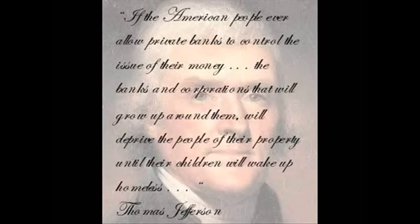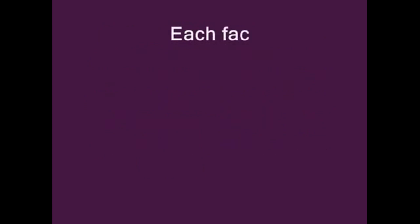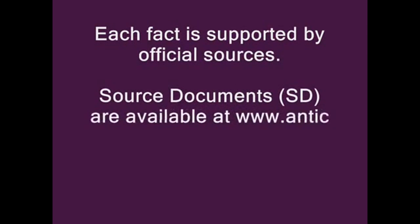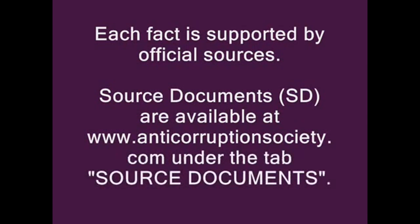If the American people ever allow private banks to control the issue of their money, the banks and corporations that will grow up around them will deprive the people of their property until their children will wake up homeless. Following is a timeline demonstrating when and how a private central banking cartel got control of the government, the people, and the assets of the United States. Each fact is supported by official sources. Source documents are available at www.anticorruptionsociety.com under the tab Source Documents.